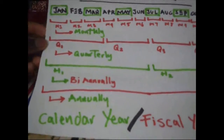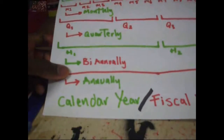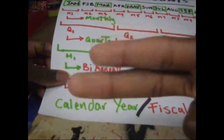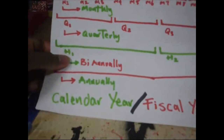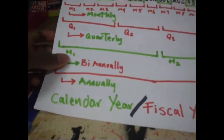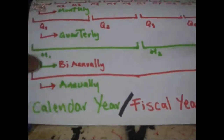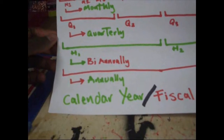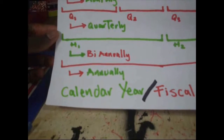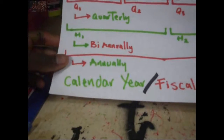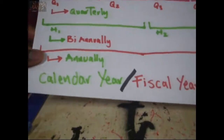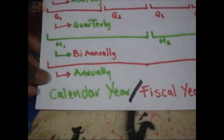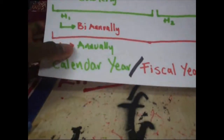Then we have biannually — 'bi,' two, 'dos' — so we have H1 and H2. That's just separating the year into two periods. Biannually, it's that simple.